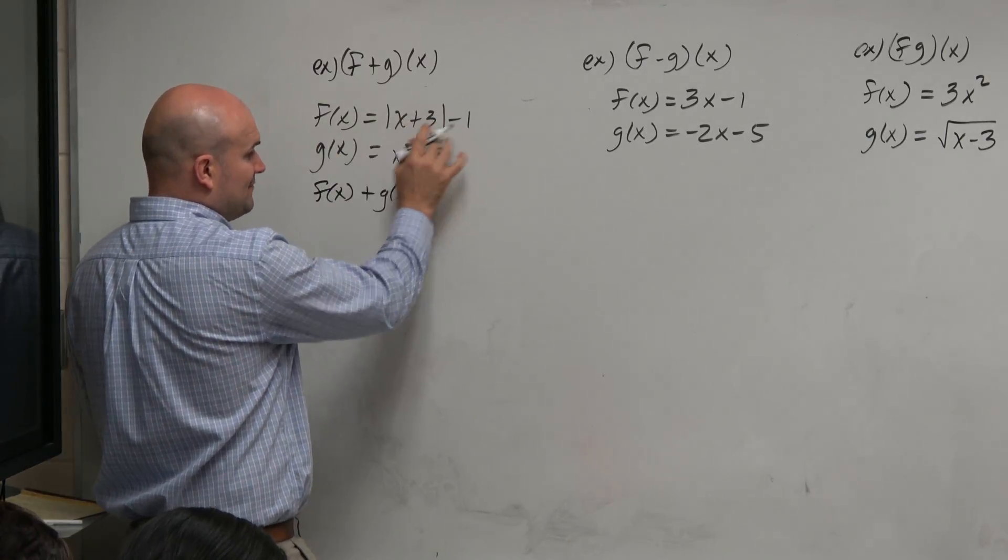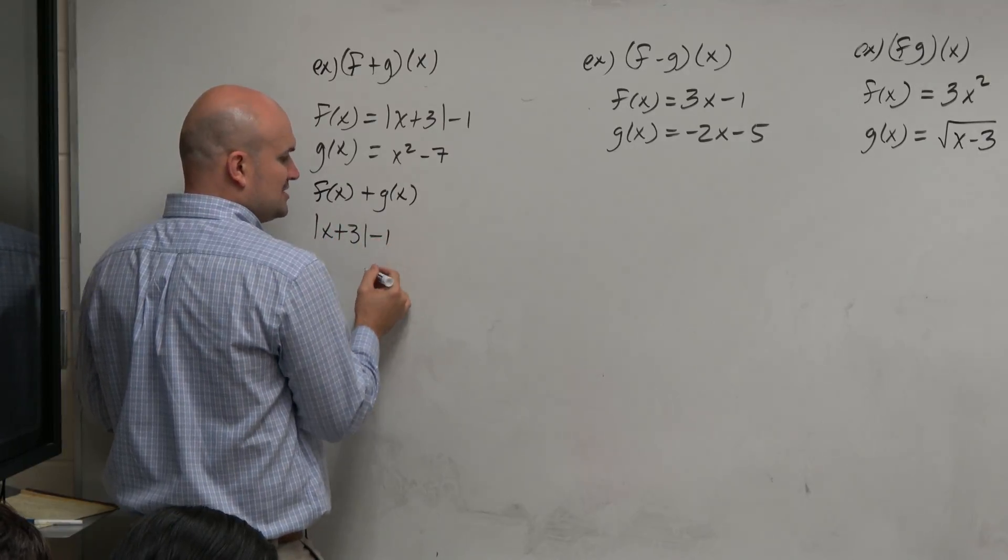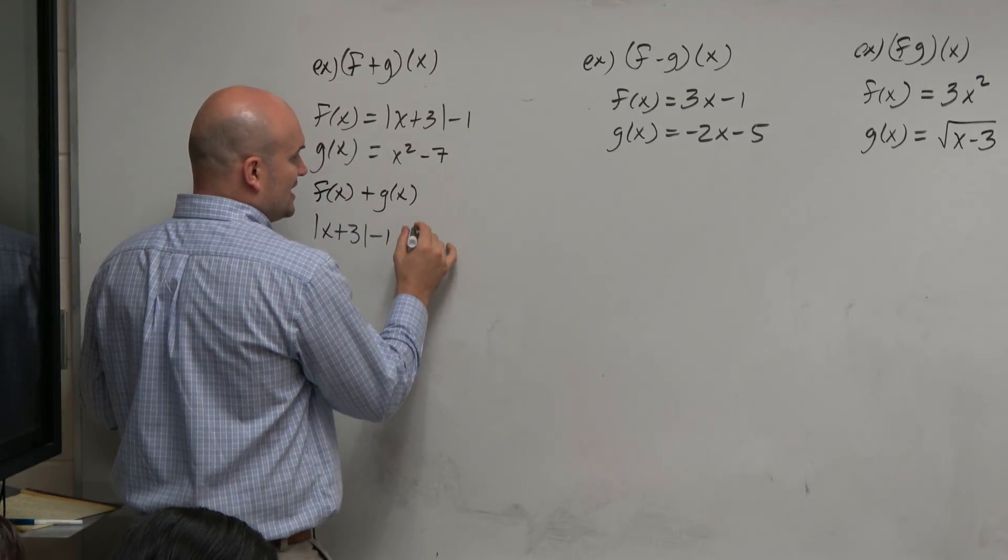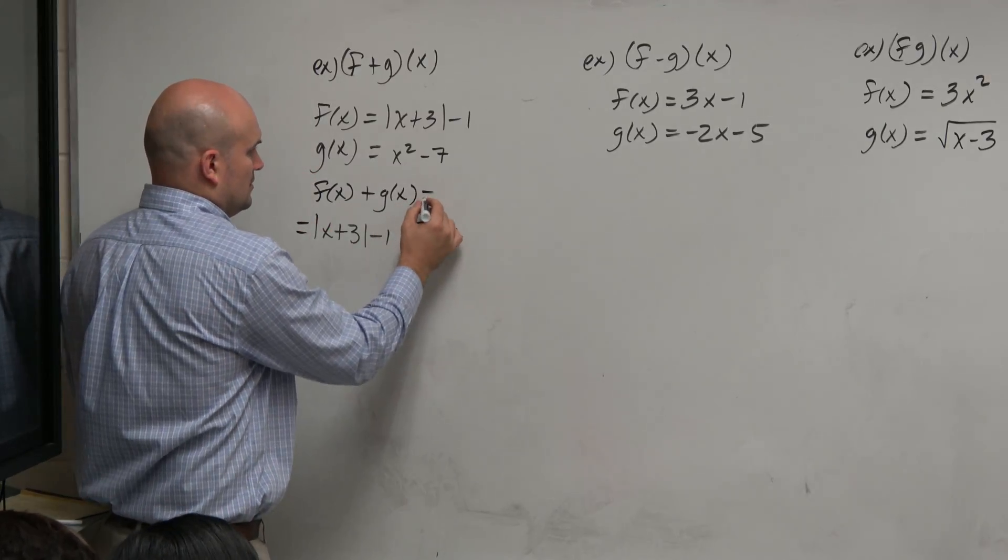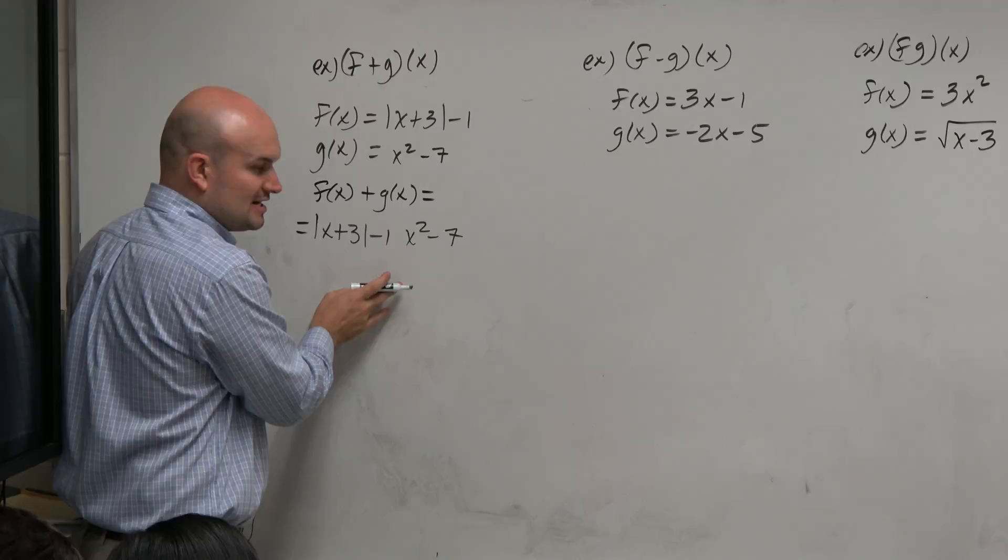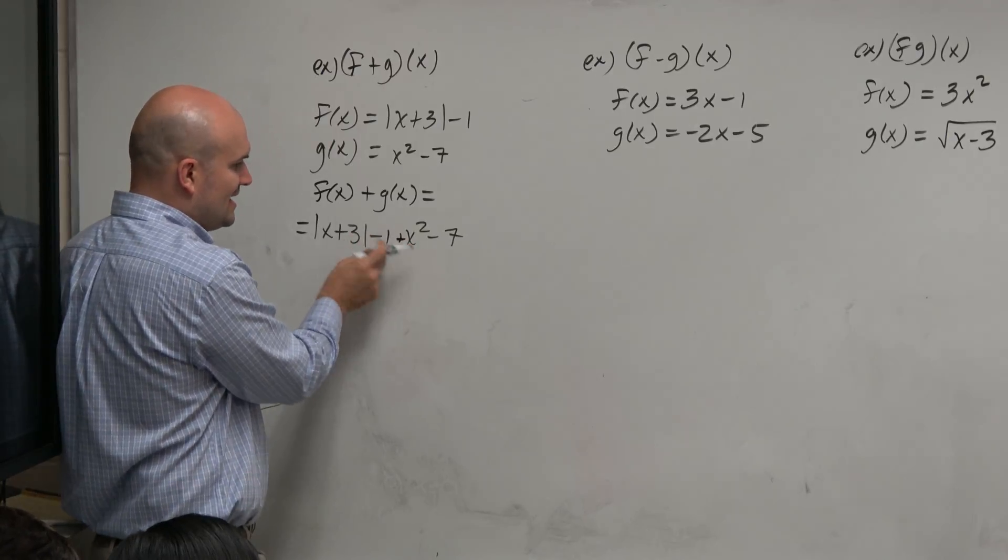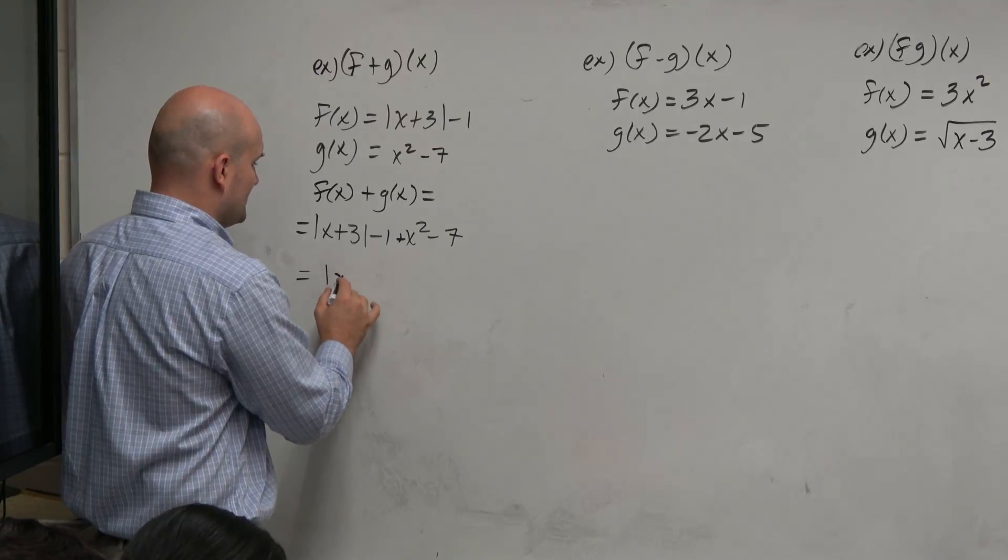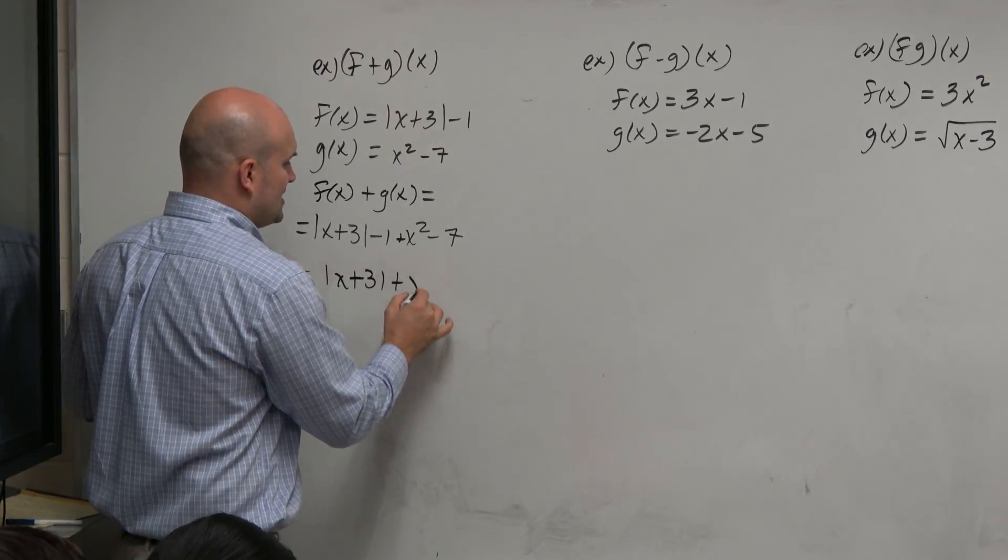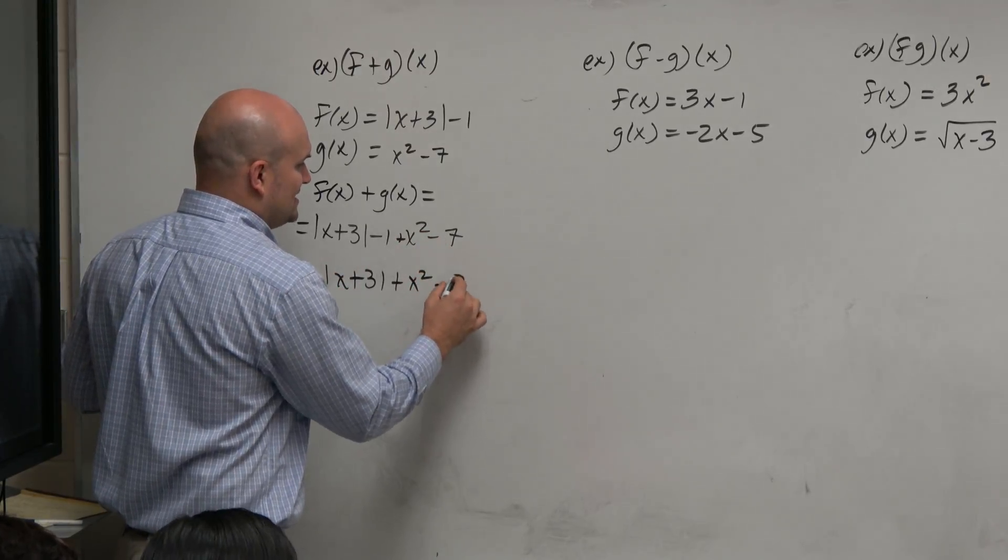So in this case, f of x is absolute value of x plus 3 minus 1, and g of x is x squared minus 7. Well, there's not really much I can do with the absolute value and the x squared, but you can see that I can combine my 7 and my 6. So that's just the way I'm going to write this: absolute value of x plus 3 plus x squared and then minus 8.